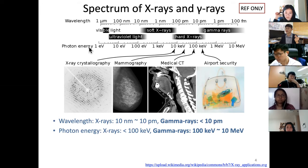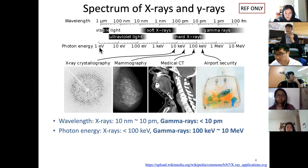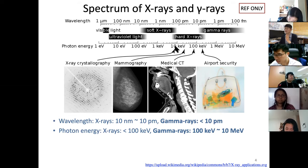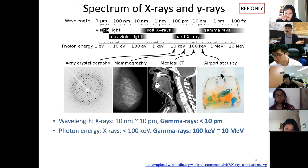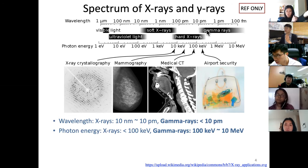We use electron volts to measure photon energy. The relation is E = qV, where q is the elementary charge and V is voltage. Hard X-rays in the kiloelectron-volt range are used for crystallography, mammography, and medical CT — they involve significant radiation exposure. Airport scanners also use strong X-ray photons. Gamma rays have even shorter wavelengths, in the picometer range.